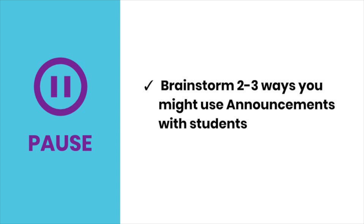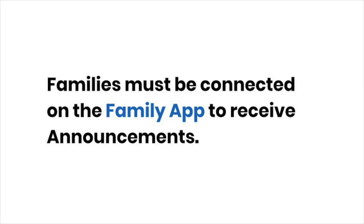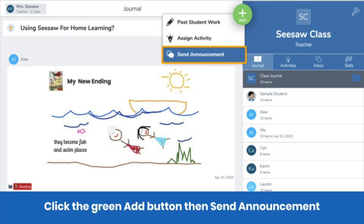Pause the video and brainstorm two to three ideas. You can also send announcements to families, making Seesaw your one-stop shop for communicating with families. Families must be connected to the Family app to receive announcements. Check out our Get Families Started training to learn how to connect families. Send an announcement to families the same way you sent an announcement to students.